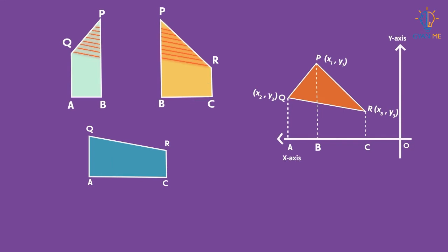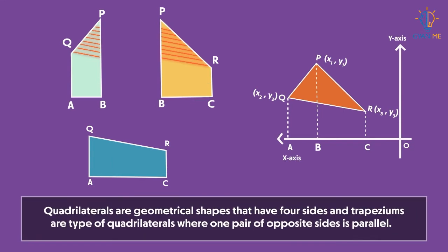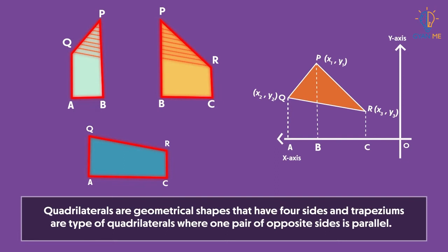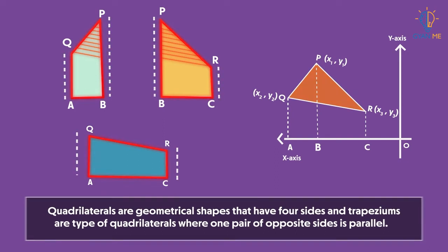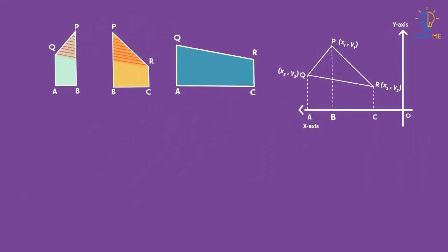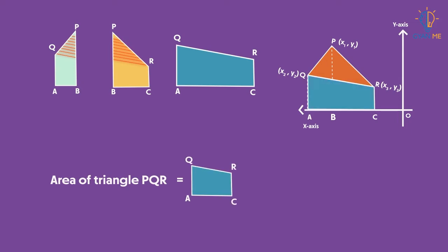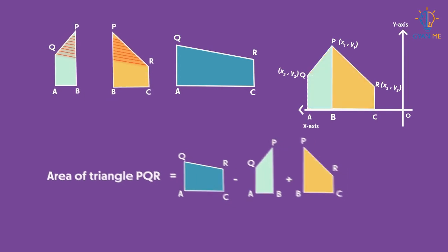Recall that quadrilaterals are geometrical shapes that have four sides, and trapeziums are the type of quadrilaterals where one pair of opposite sides is parallel. From the figure, we can see that the area of triangle PQR can be obtained when the area of trapezium QACR is subtracted from the sum of the areas of trapezium PQAB and trapezium PBCR.